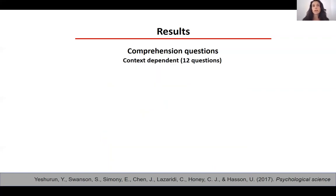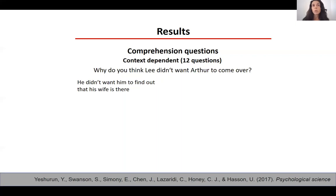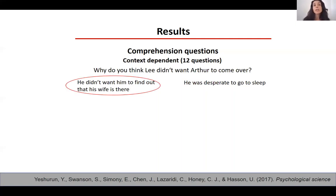However, for context-dependent questions, such as why do you think Lee didn't want Arthur to come over, we had a very different pattern of response. Participants exposed to the cheating context would say because they didn't want him to find out that his wife is there. However, participants exposed to the paranoid context would say because he was desperate to go to sleep.